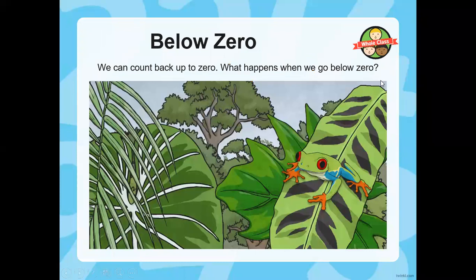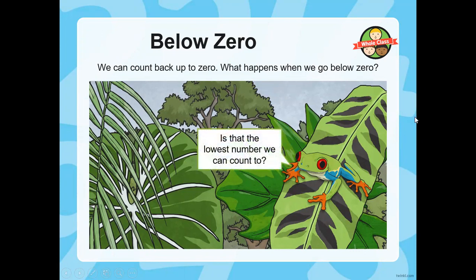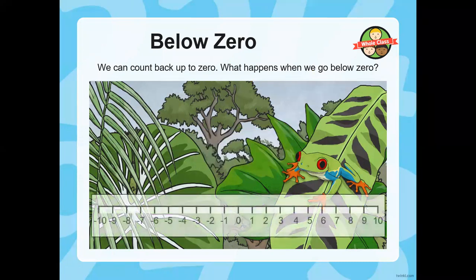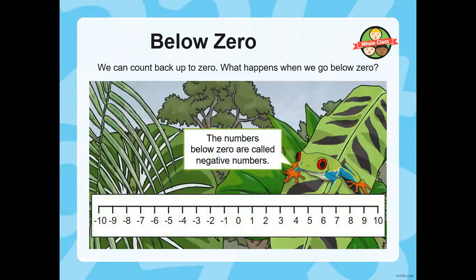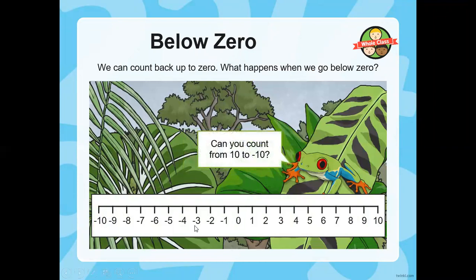We can count back to zero — we know that when counting back, for example 10, 9, 8, and then we count back up to 0. What happens when we go below zero? Is zero the lowest number we can count to? That's not true, as we have just seen that there are negative numbers to the left of zero. We can count below zero, and they are called negative numbers — minus 1, minus 2, minus 3, and up to minus 10. We can count backwards from positive 10 to negative 10, and there will be 20 numbers in between: 10 numbers from 0 to 10, and 10 numbers from 0 to minus 10.